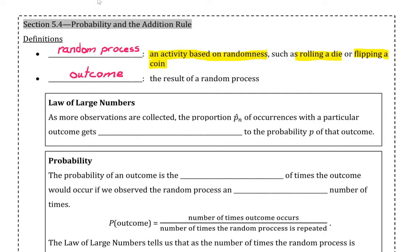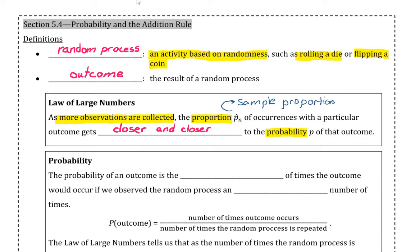The law of large numbers tells us that as more observations are collected, the proportion of occurrences with a particular outcome will get closer and closer to the probability p of that outcome. It's important to notice that p-hat is going to be a sample proportion — a point estimate for the true proportion of an outcome. So the law of large numbers tells us that as more observations are collected, your sample proportion will get closer and closer to the true proportion of that outcome.